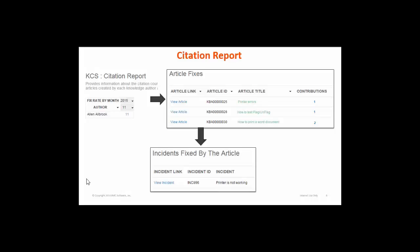The next report is the Citation Report. The citation count of authors is the number of times their articles are attached to incident tickets by other users. This report displays the contribution of each article to its author's overall citation count. To view the article fixes details report you can click on the citation count — it will show the contributions related to articles belonging to that user. To view more detail on incidents fixed by the article, click on 'Article Contribution', and it will display the incident list fixed by the article.